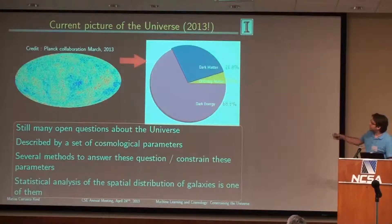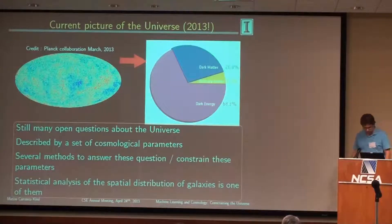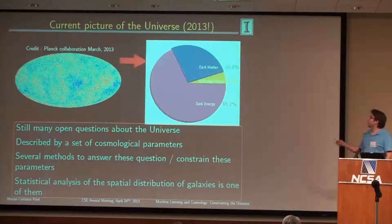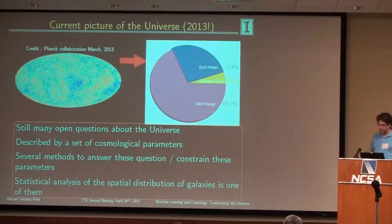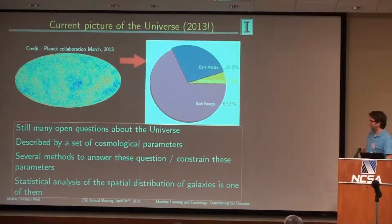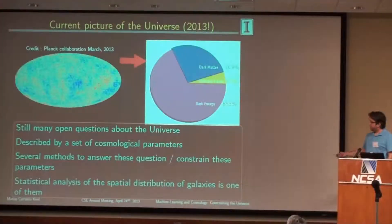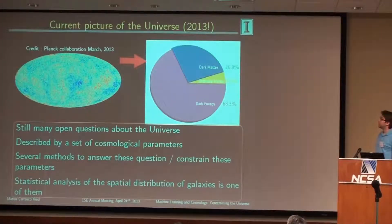This is what we know of the universe today: roughly 70% is composed of dark energy, and the other 30% is matter, with a large contribution from dark matter — almost 26% — and only 4% or 5% of normal matter, which is the matter we see in stars and galaxies. So even though Planck has measured this to very accurate numbers, there are still many open questions about the universe.